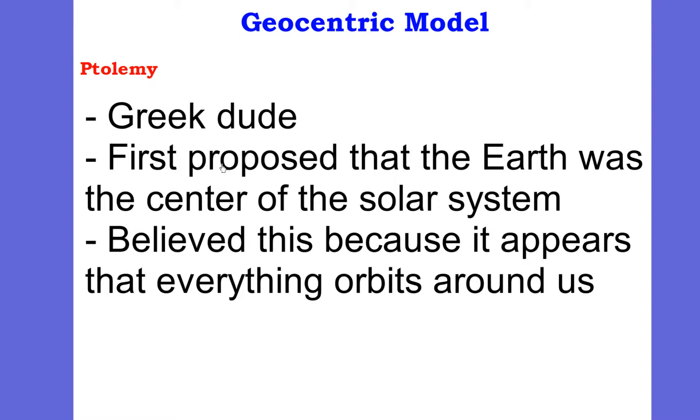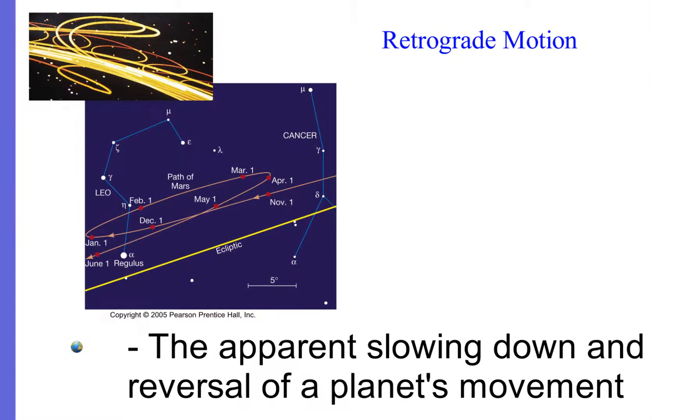Ptolemy, an ancient Greek dude, first proposed that the Earth was the center of the solar system that we know of. I'm sure people have been doing this for thousands of years before, if they even really knew what stuff in space was. But you know, history—recorded history—only goes so far back. Unfortunately, after that we have to use evidence, archaeological evidence, to kind of piece things together. This is believed because it appears that everything goes around us. Pretty simple. If you look in the sky, it's true, everything appears to go around us.